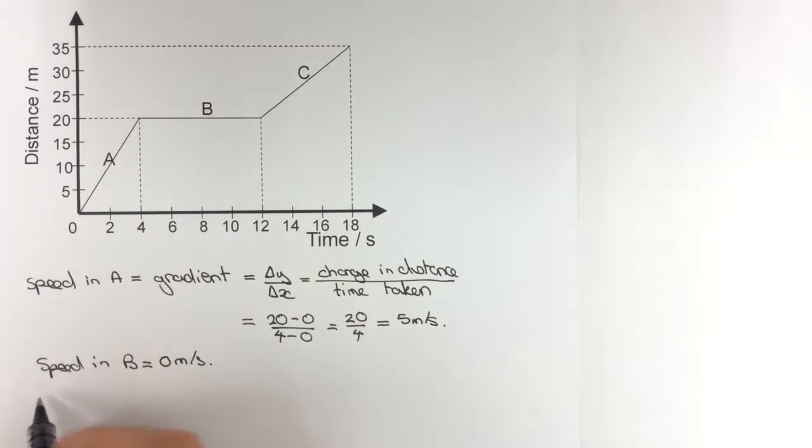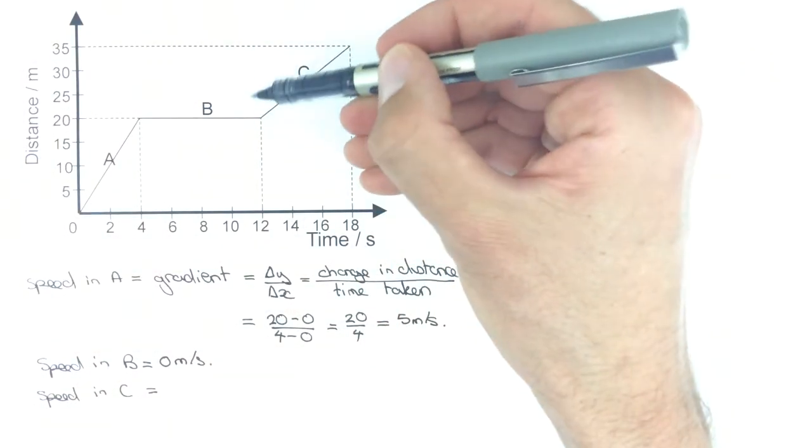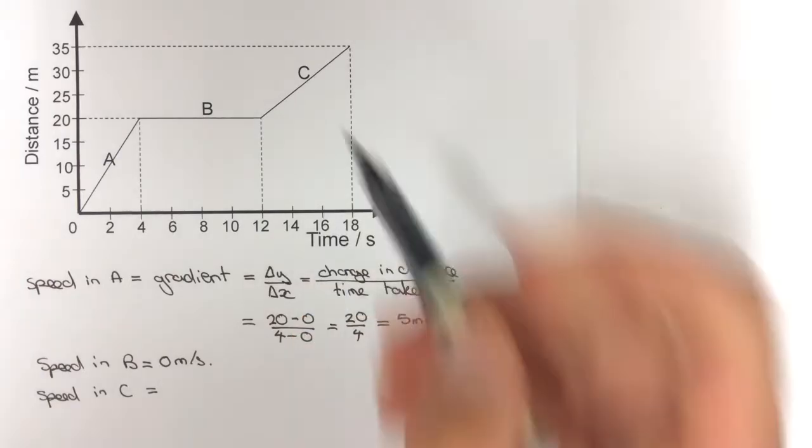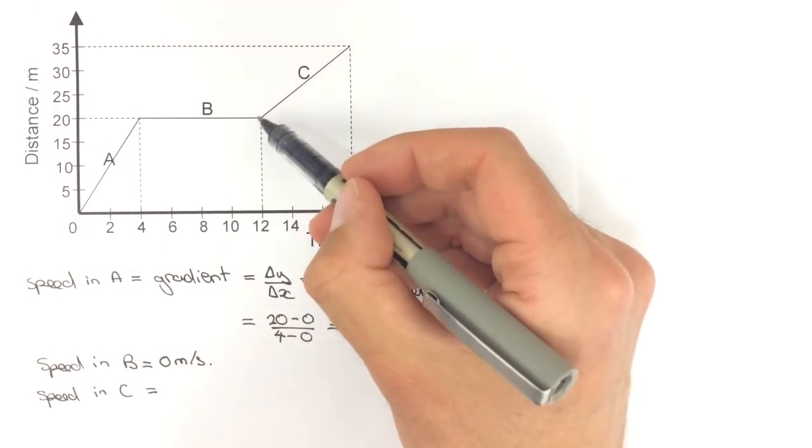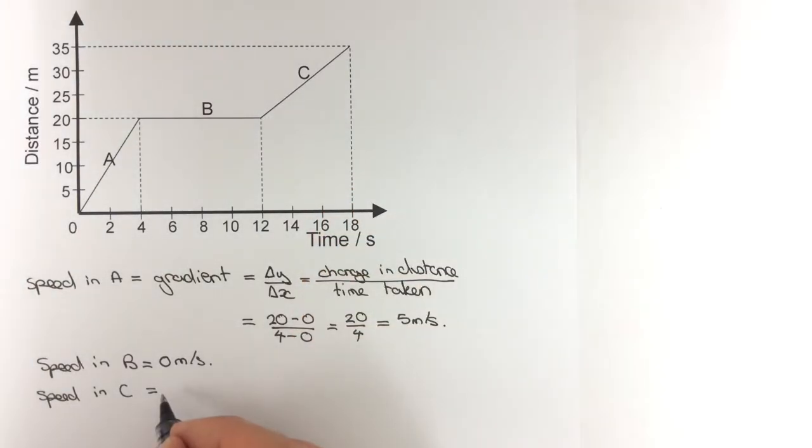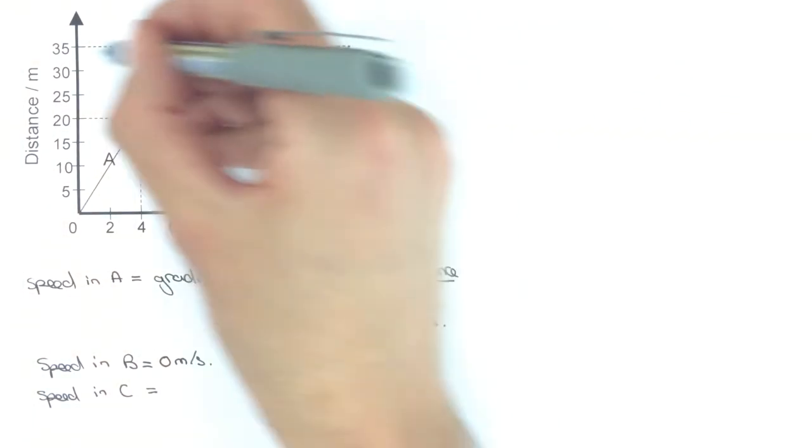Finally, let's have a go at section C. The speed in section C is again the gradient, which is the change in distance divided by the change in time. Because this doesn't start at the origin, it's a little bit trickier. I'm going to look at my final distance, which is 35, subtract my starting distance, which is 20